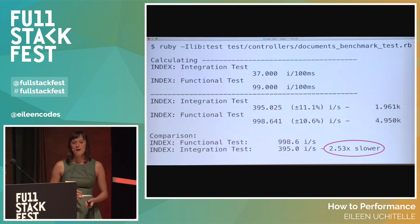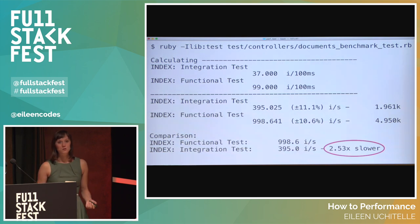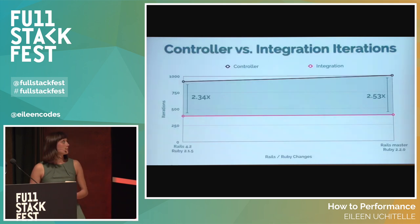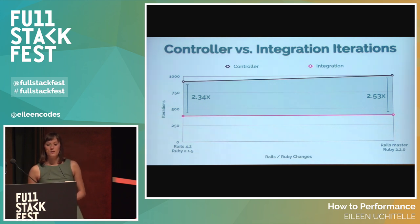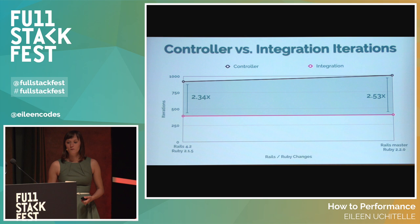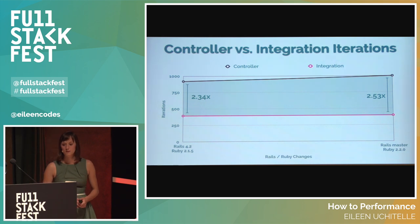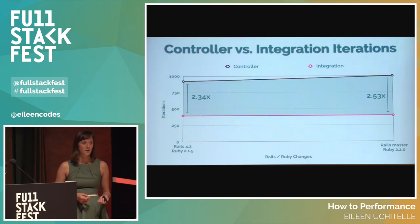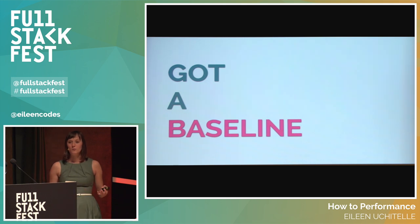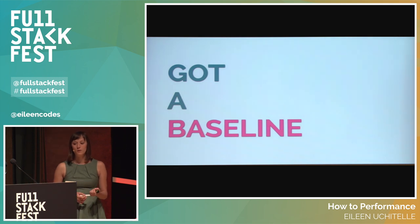If you check the iterations, they're basically the same and have a slightly higher percent of standard deviation. With Ruby 2.2.0 and Rails master, integration tests were 2.53 times slower. Here the integration tests are in pink and controller tests are in black. When we compare the difference between Rails 4.2 and Rails master, the two versions were really close in the number of iterations, but the newest Ruby and Rails was a little bit slower. For integration tests we're getting about 395 iterations per second and 998 iterations of controller tests on Rails master. Now we have a solid baseline and we can start improving our code.